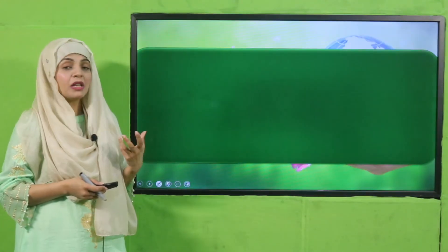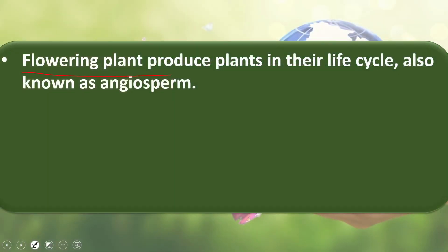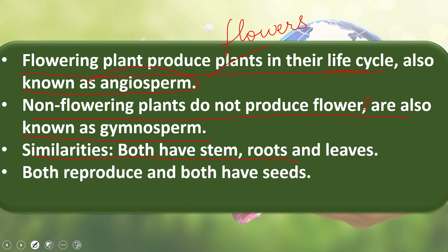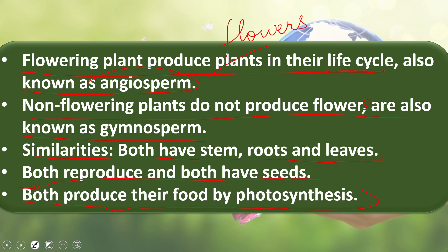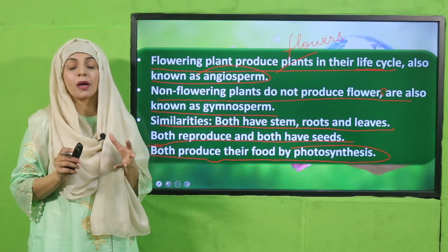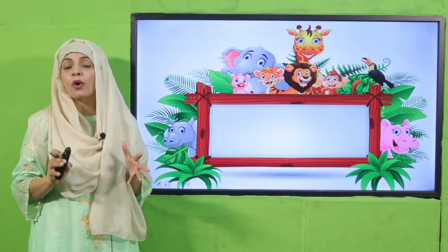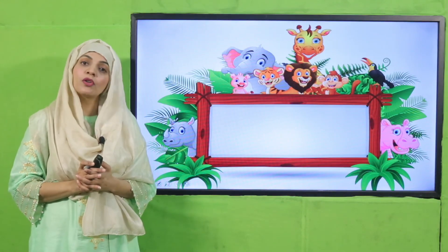Now is the time for the wrap-up. What have we learnt today? Flowering plants produce flowers during their life cycle and are also known as angiosperms. Non-flowering plants do not produce flowers and are also known as gymnosperms. Similarities: both have stems, roots, and leaves; both reproduce; both have seeds; and both produce their food by photosynthesis. Today you have classified plants into two groups — flowering and non-flowering — and discussed their similarities. I hope you have understood. Keep everybody around you safe, have a good day, and thank you so much.